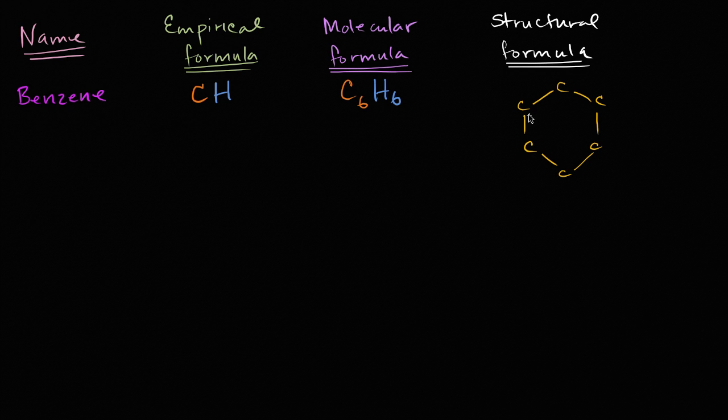And then you have a double bond. Every other of these bonds on the hexagon is a double bond. And then each of these carbons are also attached to a hydrogen, also bonded to a hydrogen.